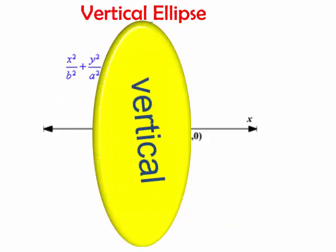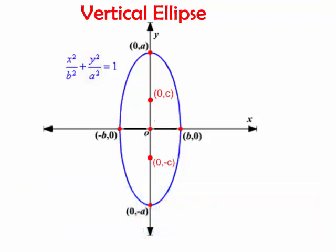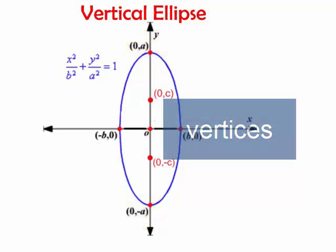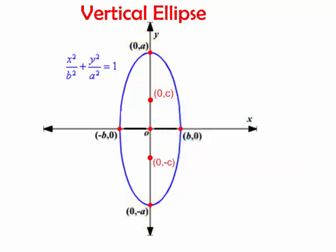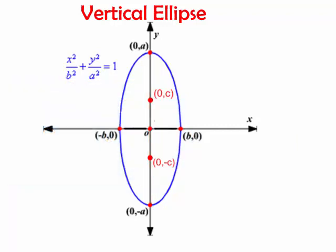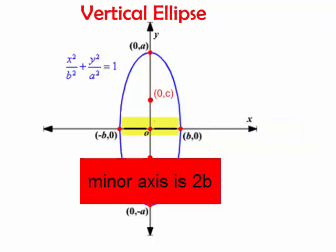For a vertical ellipse, notice that the a is under the y-square term. Therefore, my vertices are on the y-axis. My vertices are (0, a) and (0, -a). Once again, notice the foci are on the major axis which in this case is vertical. The length of the major axis is still 2 times a and the length of the minor axis is still 2 times b.